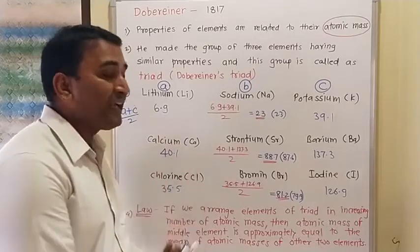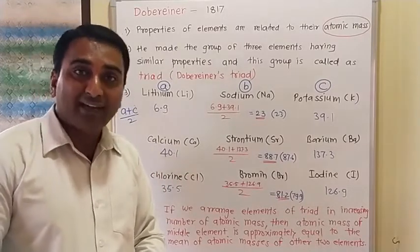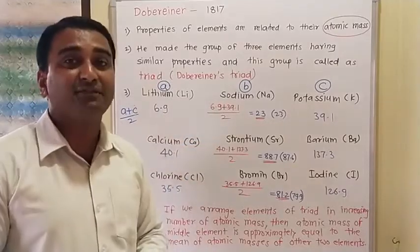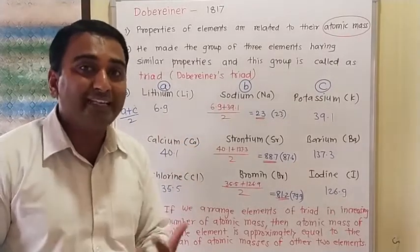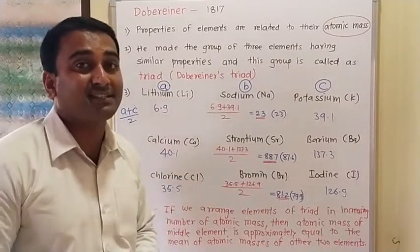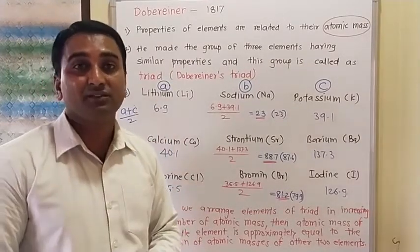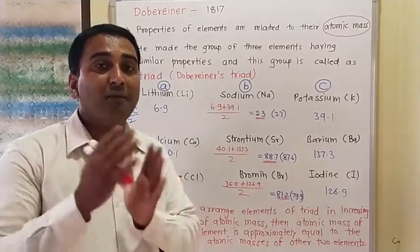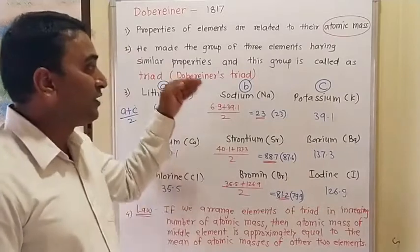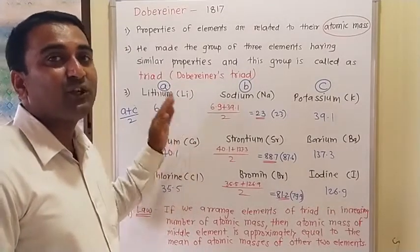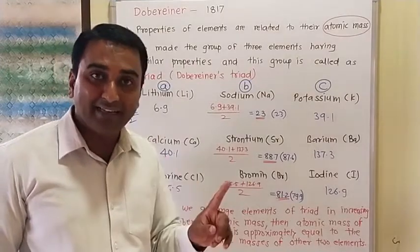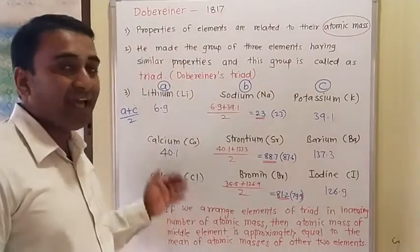But why did Döbereiner's theory fail? At that time, few elements were known, but he classified only 9 elements and made only 3 triads. What about the remaining elements? A classification not applicable to all elements would fail. Because of this, he was not able to classify all known elements at that time, so Döbereiner's theory failed.